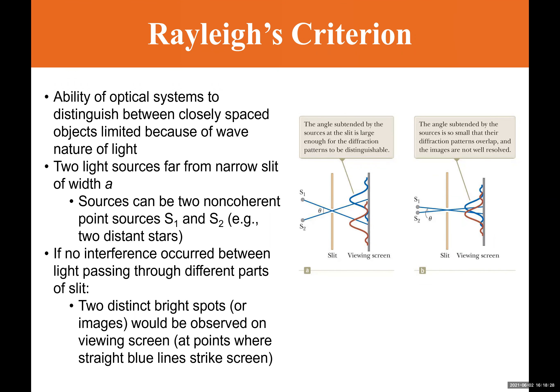Next, let's look at what we call the Rayleigh criterion. This one assumes that instead of one source generating the light that goes through an opening, we now have two sources. Through the opening of one slit, you have two different lights — they could even be different wavelengths, so they don't have to be coherent. Our ability to distinguish the diffraction patterns of each source depends on how close those sources are to one another.